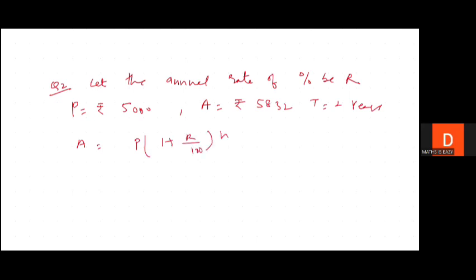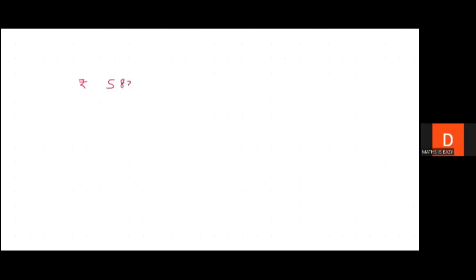So rupees 5,832 equals rupees 5,000 × (1 + R/100) squared. In the next step, we bring 5,000 to the other side: 5,832 divided by 5,000 equals (1 + R/100) squared. Simplifying, this becomes 2916/2500, which equals (54/50) squared.